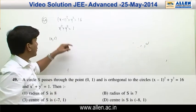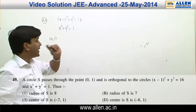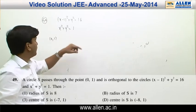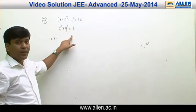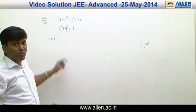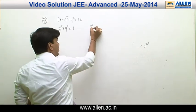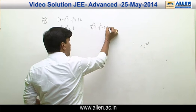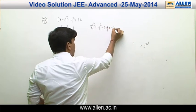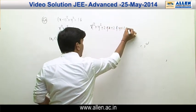In question 49, we need to find the equation of a circle which cuts two given circles orthogonally and passes through the point (0, 1). Let the equation of this circle be x² + y² + 2gx + 2fy + c = 0.